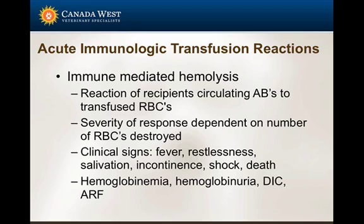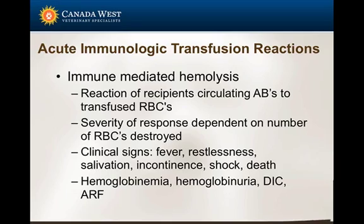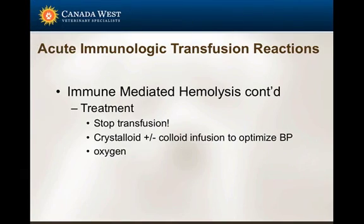Other things that we may see, which you probably wouldn't see right away, include hemoglobinemia, hemoglobinuria, DIC, and acute renal failure. The most important thing is to stop the transfusion. You may be involved in administering crystalloid therapy and oxygen therapy to help stabilize the patient and provide supportive care.